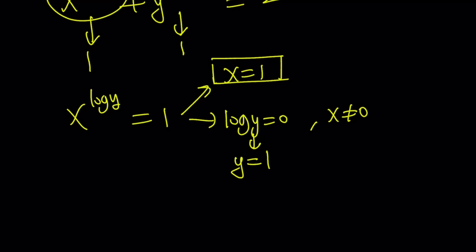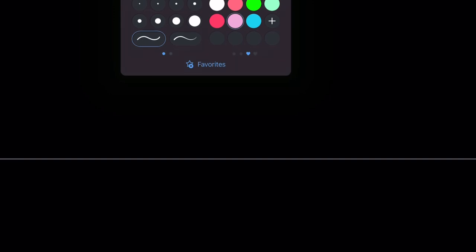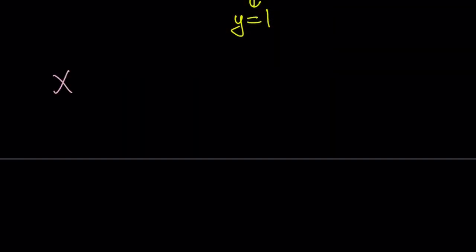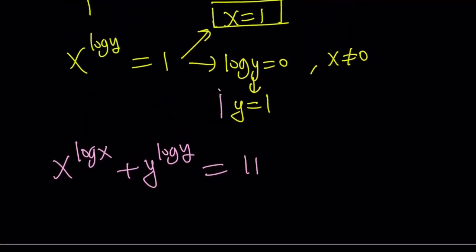And what does that give us? So let's take a look. When x equals 1, what happens in the second equation? That's something we need to check. So let's go ahead and rewrite the second equation. The second equation tells us x to the power log x plus y to the power log y equals 11. But before I start substituting, let's go ahead and take a look at the solutions. Like what does the first equation give us? x equals 1 or y equals 1 because either one can be true.